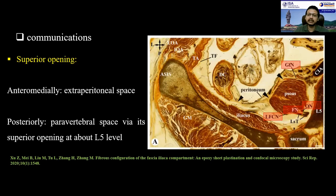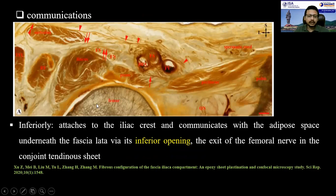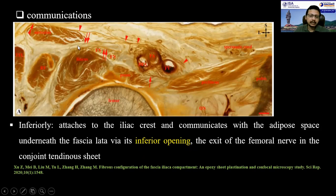The fascia iliaca compartment and the psoas compartment are not enclosed within the same fascial envelope. As seen in this picture, the fascia iliaca compartment contains the femoral nerve and lateral femoral cutaneous nerve, but not the obturator nerve and genitofemoral nerve. A membrane-like structure separates the fascia iliaca compartment from the paravertebral gutter where the obturator nerve travels. Inferiorly, the fascia iliaca attaches to the iliac crest and communicates with the adipose space underneath the fascia lata via its inferior opening through which the femoral nerve exits.